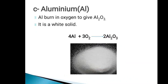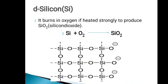The next element is aluminum. Aluminum is also a metal — when aluminum burns in oxygen gas it gives a white solid aluminum oxide, also called alumina. The chemical equation is: Al burns in oxygen to give Al2O3. The next element is silicon — silicon burns in oxygen if heated strongly to produce silicon dioxide, also known as silica. Silicon dioxide is also a giant covalent molecule with a network of covalent bonds.